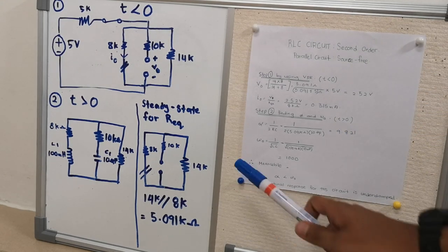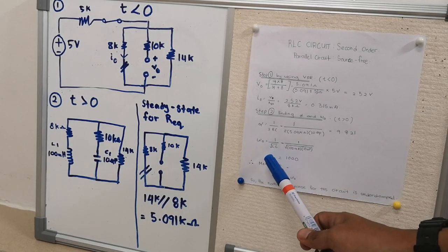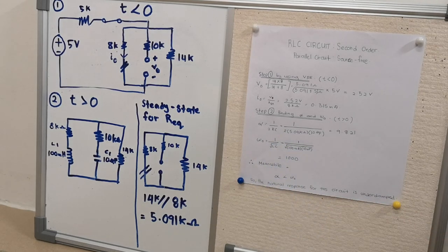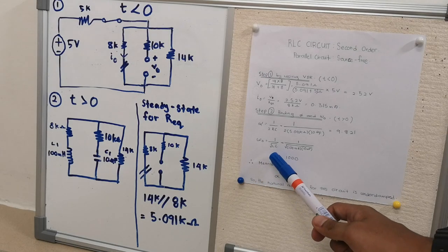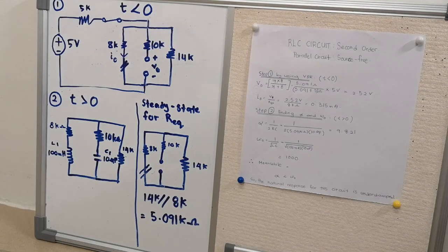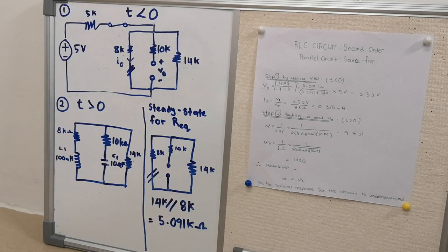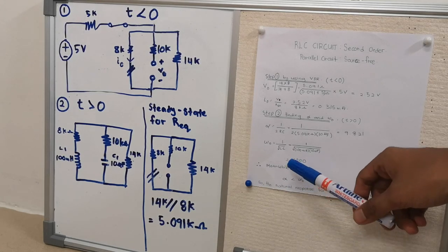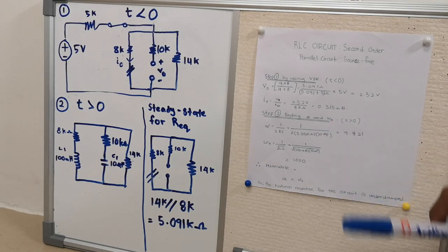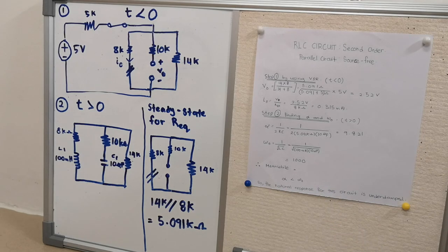Next, for omega naught, the equation is 1 over the square root of L times C. The values of L and C are taken from the circuit at T greater than zero. The answer gives omega naught equal to 1000. We can see that omega naught is greater than alpha, so the natural response of the circuit is underdamped.